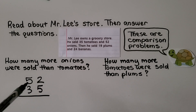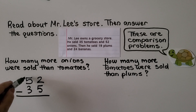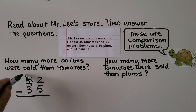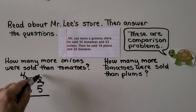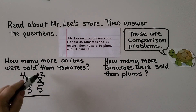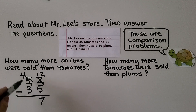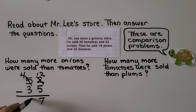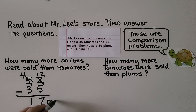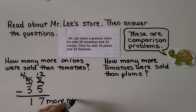We subtract. We have 2 ones and need to take 5 away — that's not enough, so we regroup from the tens place. The 5 tens becomes 4 tens and the 2 ones become 12 ones. 12 minus 5 is 7. Four tens minus 3 tens is 1 ten. That means he sold 17 more onions than tomatoes.